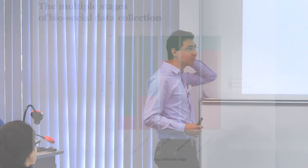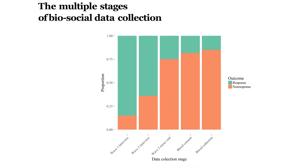This is an example of the process of data collection from Understanding Society. We have wave one with some respondents in green and some non-respondents in red, then wave two with more non-respondents, and in wave two a subsample was selected for the nurse visit. Then we have three stages: the nurse visit, consent to blood, and the actual blood collection. We see that with each stage we lose some people, and in all of those stages the nurses are involved. My question is: do they differentially influence these stages?